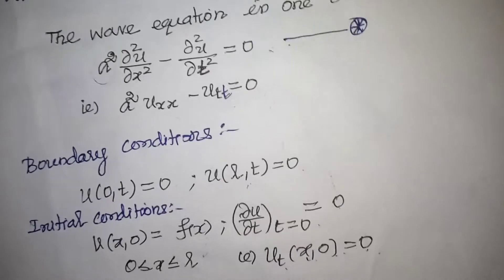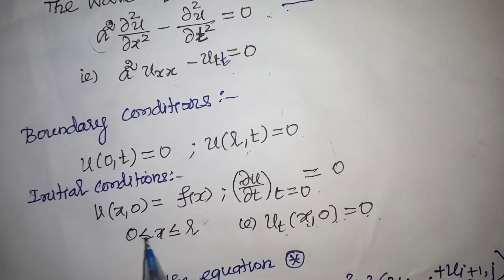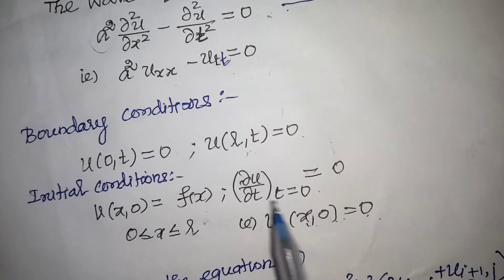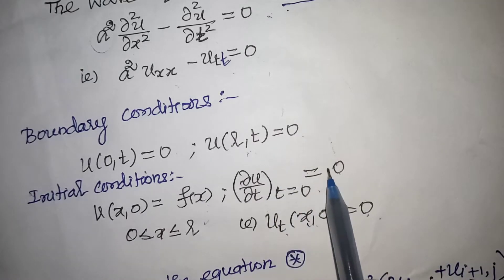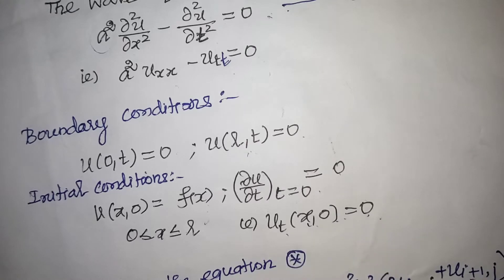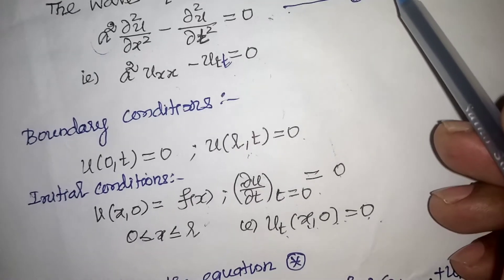The initial conditions are: u(x,0) = f(x) for x from 0 to l, and ∂u/∂t at t=0 is equal to 0, that is u_t(x,0) = 0. Now we solve equation star using these initial and boundary conditions.